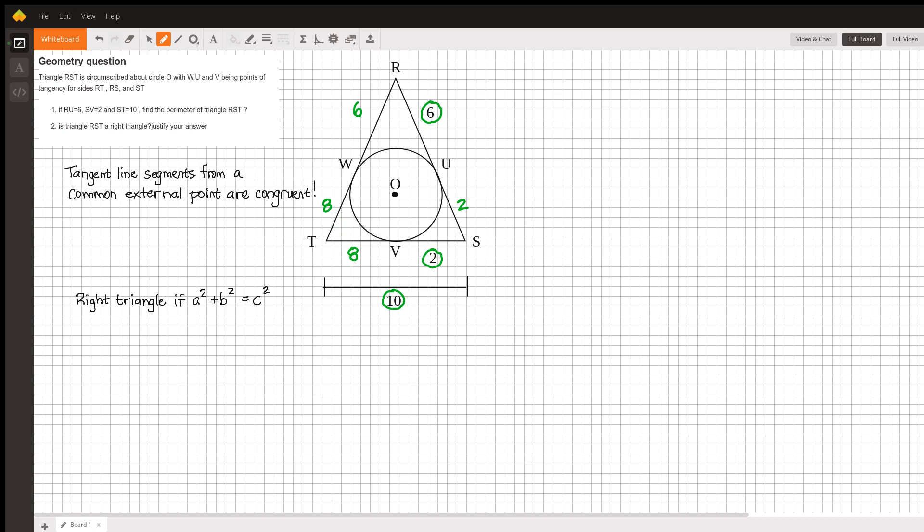Now we're ready to write down what the lengths of each side of this triangle are. The length of RS is going to be equal to the sum of the two pieces, which is 6 plus 2 for a total of 8. The distance from R to T is 6 plus 8, which is 14.